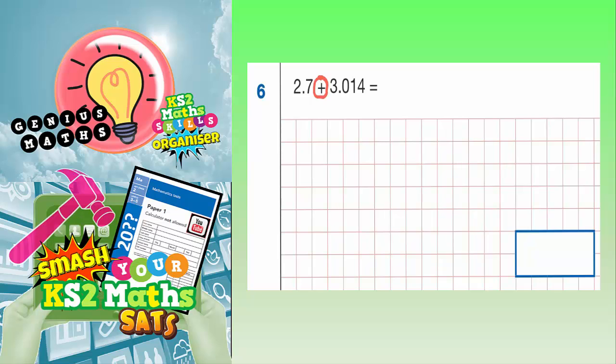So when you're using a column method, notice that the exam paper has written the numbers side by side. We need to write the numbers one on top of the other.